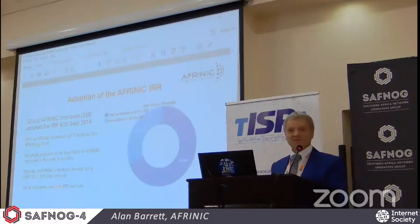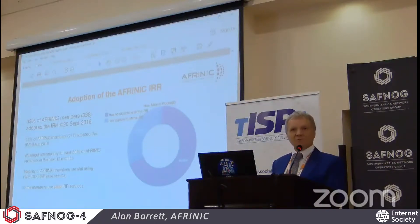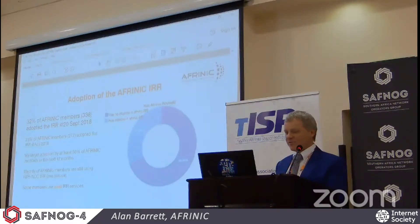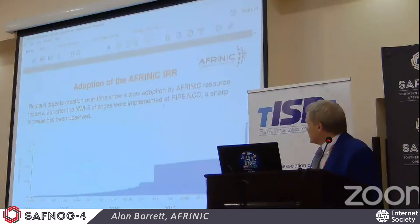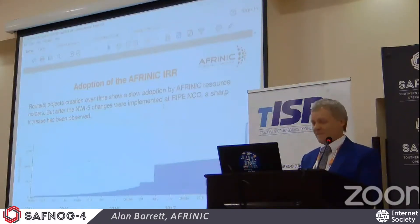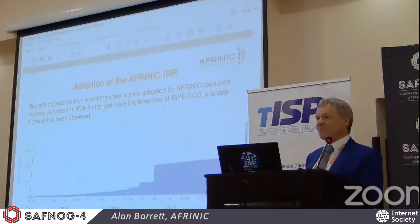We'd like to see it above 50% within the next year. Looking at the number of members with routes in the RIPE registry — it's more than 1,000, which constitutes about 60% of the AFRINIC membership. We'd like them all to use the AFRINIC routing registry. This graph shows the number of routes. Look at that enormous jump in the last month. It's been fairly flat for most of 2017, picked up slowly since about May or June this year — that's when we started announcing that some changes were coming in the RIPE registry.